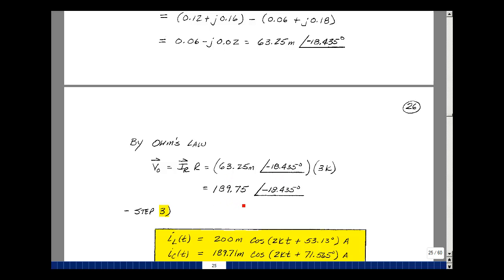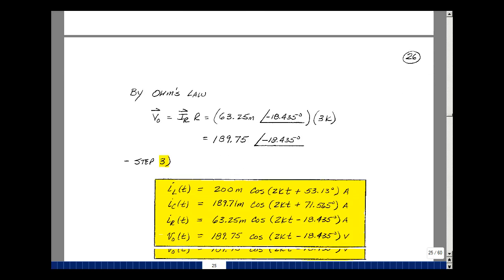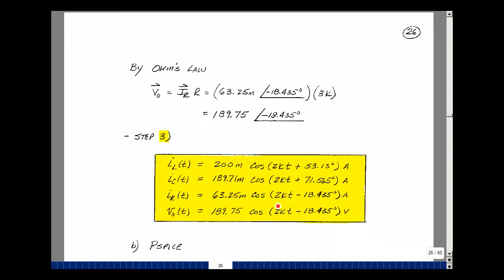Now I'm ready for my last step, and that is to find my four variables in the time domain by simply putting the cosine of omega t between the magnitude and the angle.